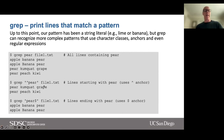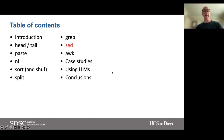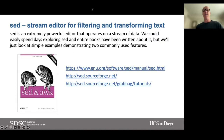Up to this point our pattern has been a string literal such as 'lime' or 'banana', but grep can recognize more complex patterns using character classes, anchors, and even regular expressions. For example, we can use the caret character — an anchor — to find just those lines that begin with 'pear': `grep '^pear'`. Or we can use the dollar anchor to find lines that end with 'pear': `grep 'pear$'`. So now we only get lines that end with pear.